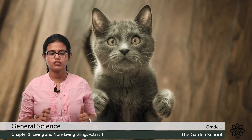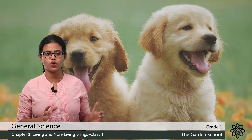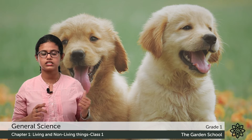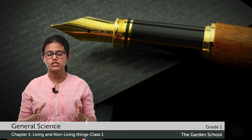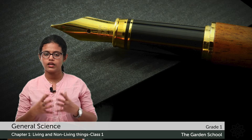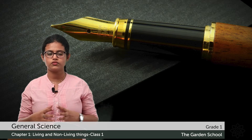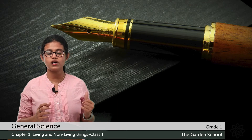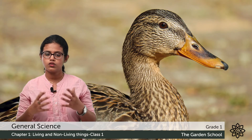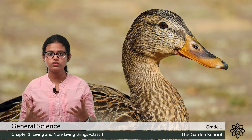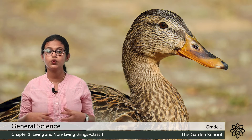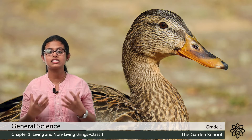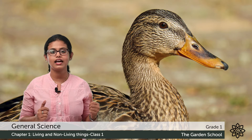Are you ready with the answers? The first picture was a dog — it is a living thing. The next picture was a pen. Does a pen need air, water, or food to live? No — so it is not a living thing. The next one was a duck. Do ducks need air, water, and food? Yes. Do they move? Yes. Do they have young ones? Yes — baby ducks are called ducklings. So duck is a living thing.